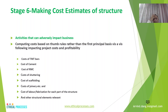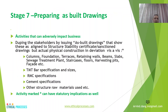Stage 6 covers cost estimates for the entire structure. The structure is one of the most important contributors to total project cost, including bars, cement, shuttering, RMC, labor, and fabrication costs. Rather than using a thumb-rule basis — such as saying the structure cost will be a fixed amount per square foot — one must use first-principle costing.